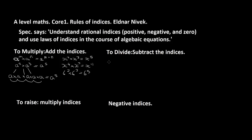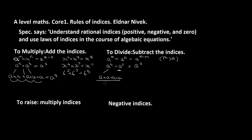Now to divide numbers with indices, we actually subtract the indices. So if we have a to the m divided by a to the n, that gives us a to the m minus n, assuming m is greater than n. We can show that works: a to the power of 4 divided by a squared. Writing it out as a times a times a times a, divided by a times a, we cancel two a's, leaving a squared.